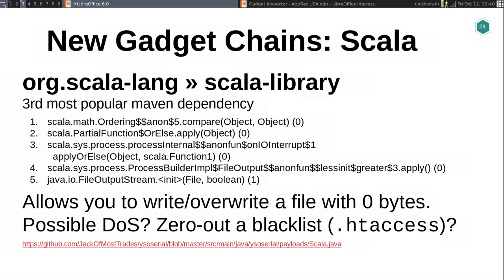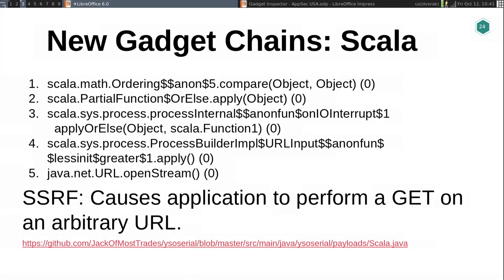In scanning other popular libraries, a bunch of stuff also popped up for Scala — the third most popular library. I didn't find an RCE gadget chain in Scala, but I found a gadget chain that would write or overwrite a file with zero bytes, which is potentially interesting because you can basically denial-of-service a web application by overwriting some of its resources. Conceivably you could also zero out a blacklist like an .htaccess file. By tweaking that a little bit, another gadget chain discovered in Scala allows you to do an SSRF — a GET against an arbitrary URL — which if you've ever done pen tests against applications, once you manage a GET operation inside the perimeter you can end up doing a lot of interesting things.